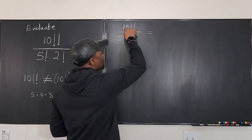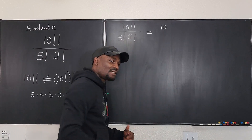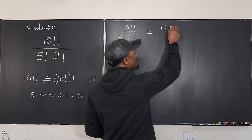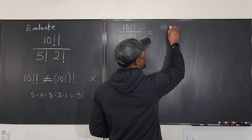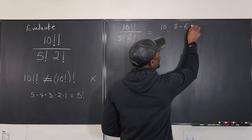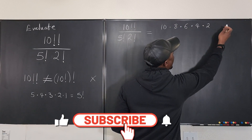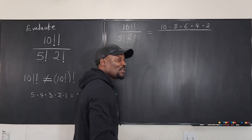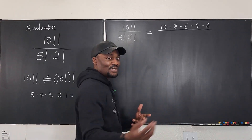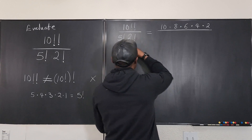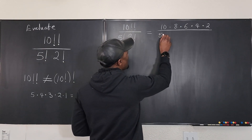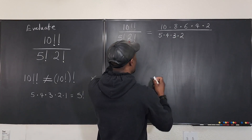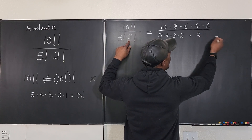Well, this is the same thing as 10. Now, the next thing you multiply by — because it's a double factorial — will not be 9. You're going to go down two steps. So it's going to be 10 multiplied by 8 times 6 times 4 times 2. Two steps from 2 is 0, and you always stop at 1, so we don't need that. The denominator will be 5 times 4 times 3 times 2, and 2 factorial is going to be just 2 times 1, which is 2.